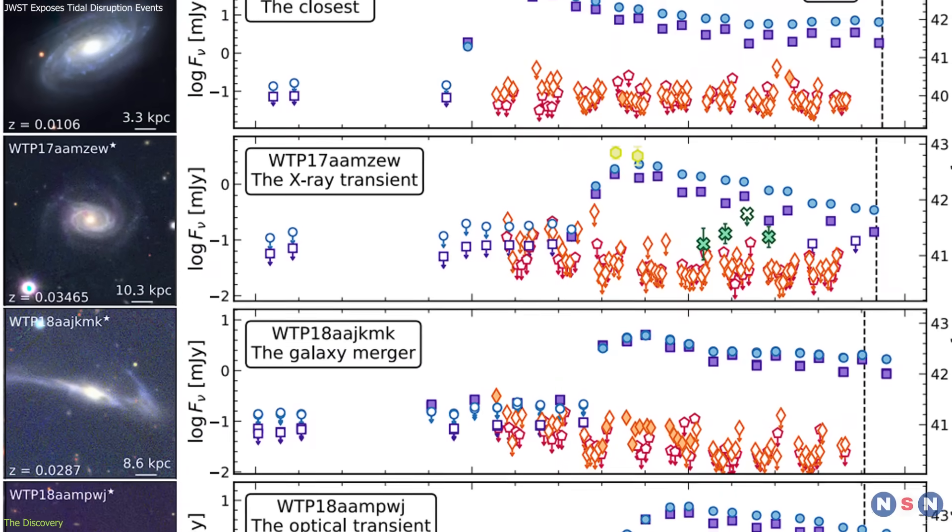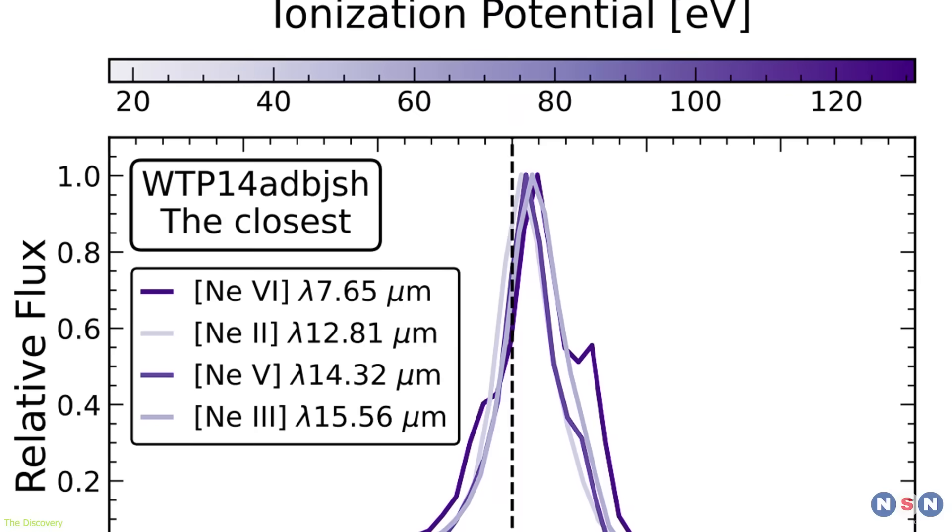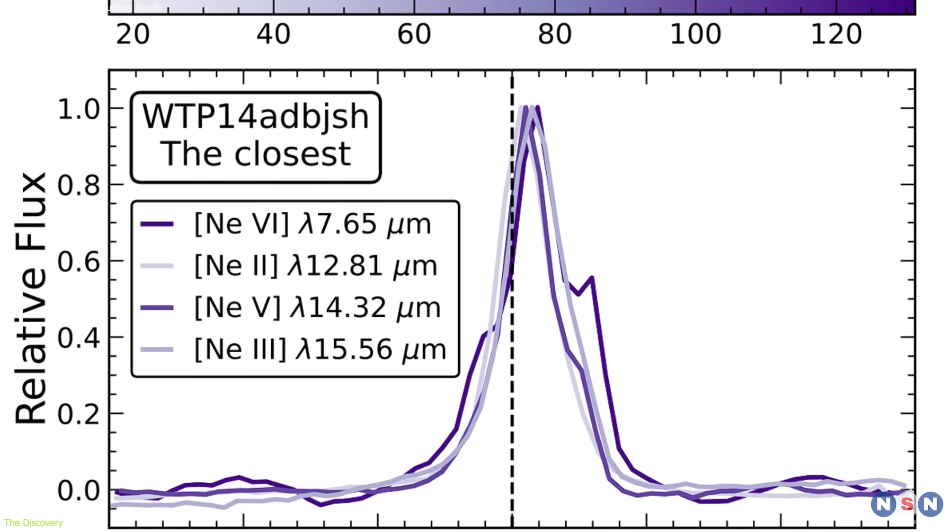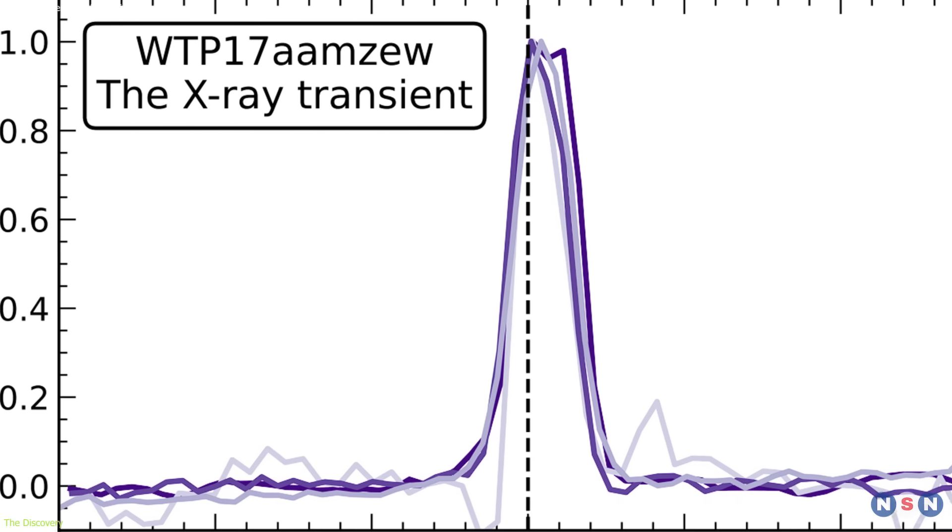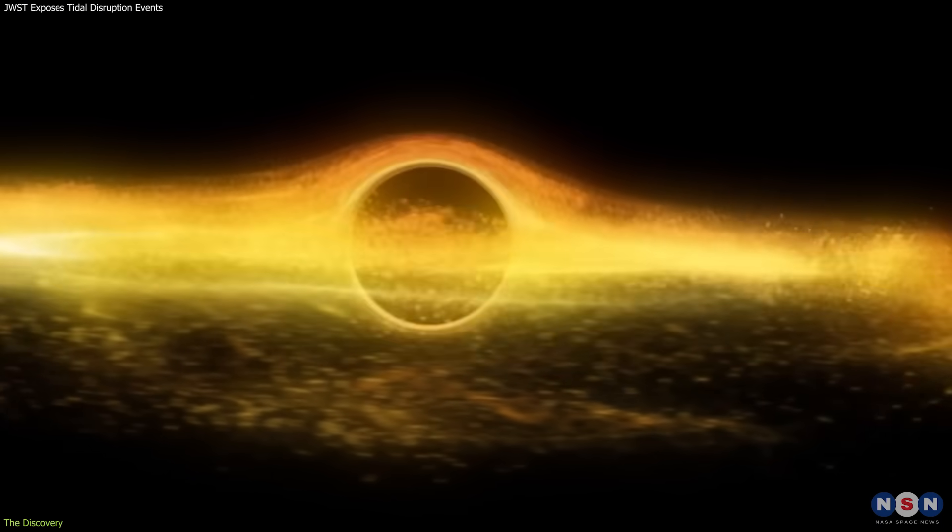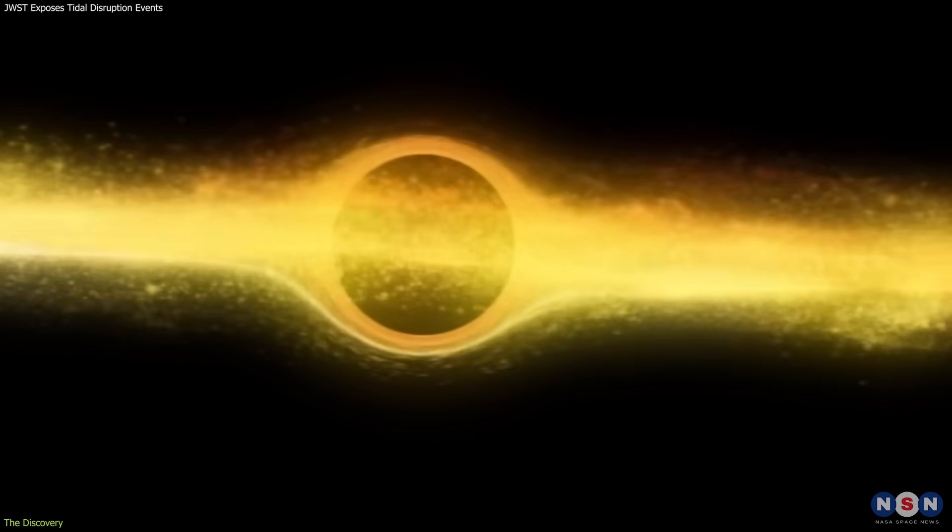Each case provided unique insights. One was the closest TDE confirmed so far, only about 130 million light-years away. Another coincided with a brief X-ray flare, offering a rare multi-wavelength view. A third showed evidence of gas moving at unusually high velocities, suggesting debris orbiting close to the black hole.